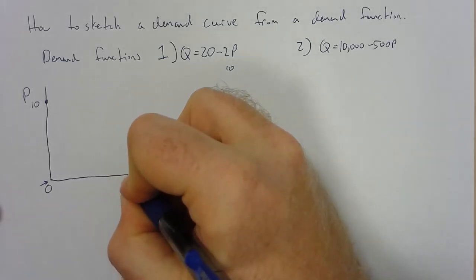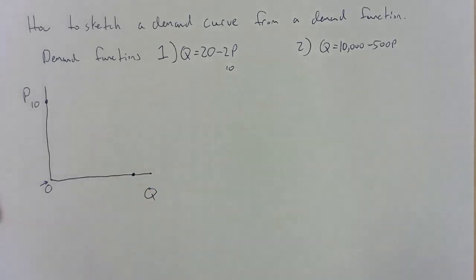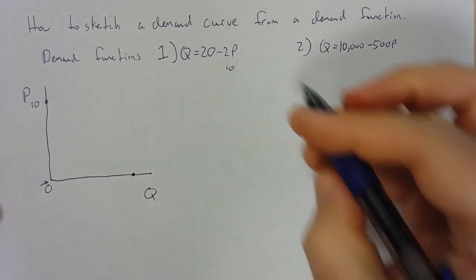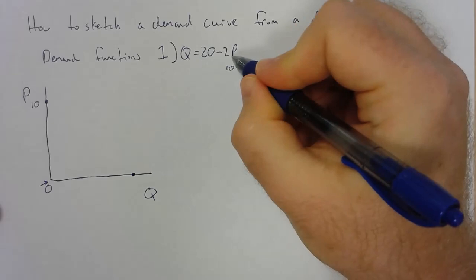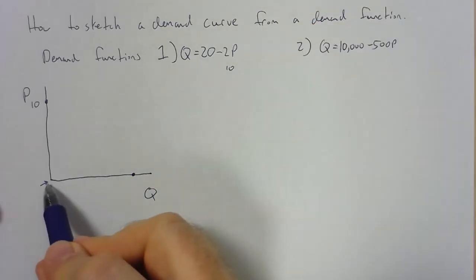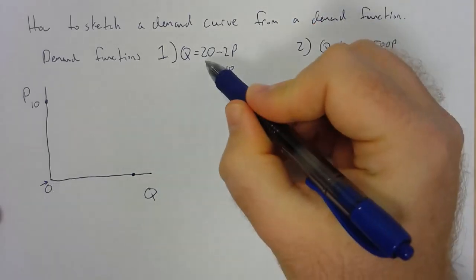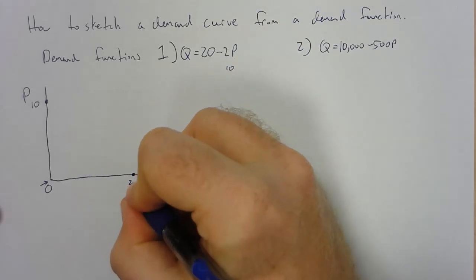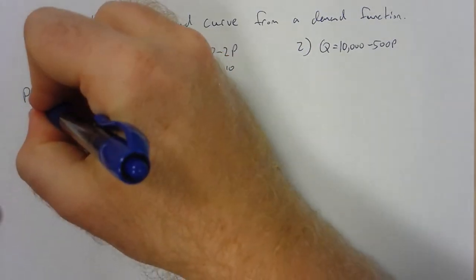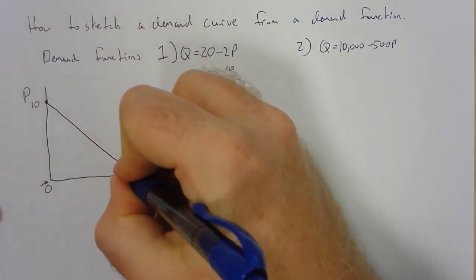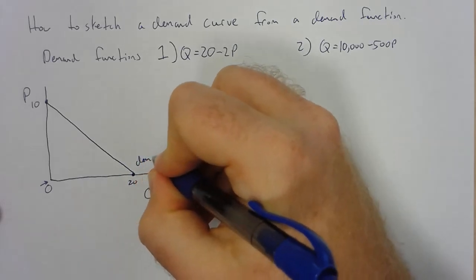Now we figure out where the demand curve is going to intersect the x-axis or the quantity axis. If p equals zero, quantity is going to be equal to 20. And so we can just draw a straight line because we know it's a linear relationship between those two points.